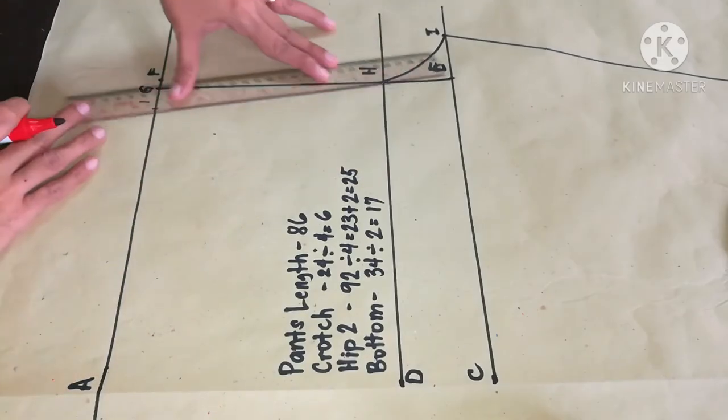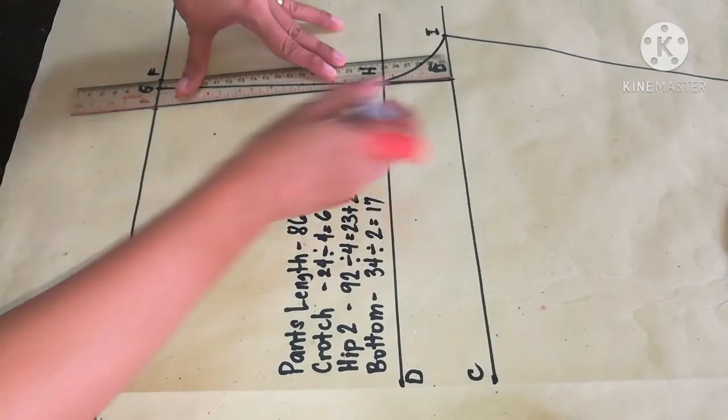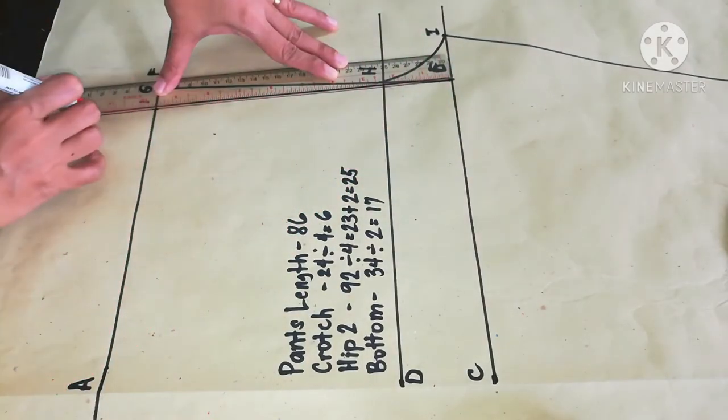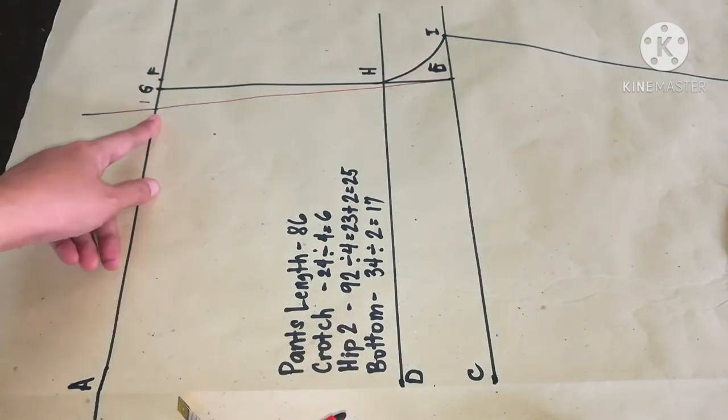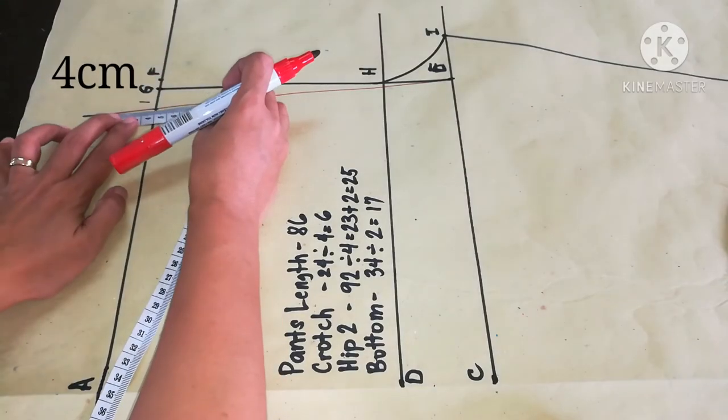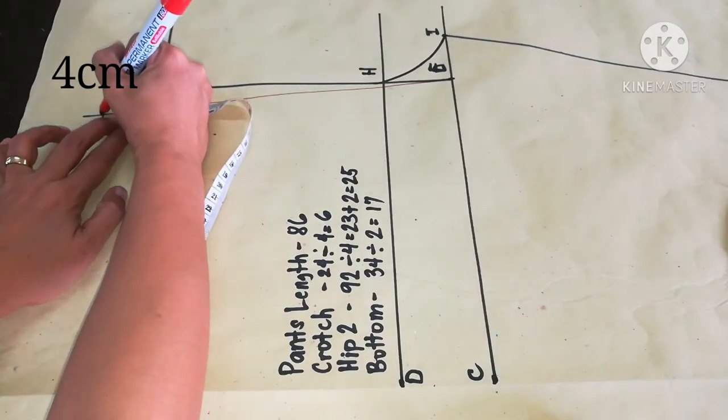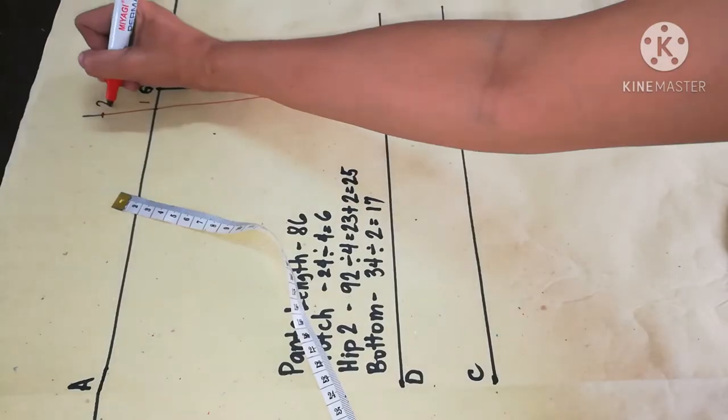And then connect point E to point 1 with extension. From 1, measure 4 cm upward and mark it point 2.